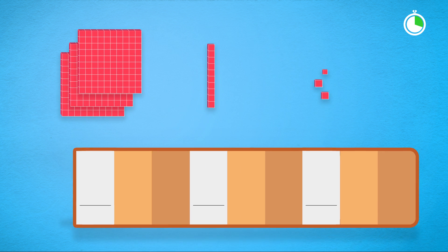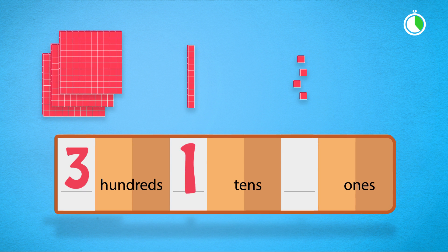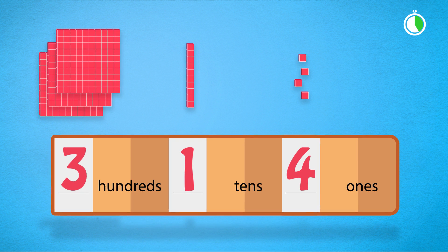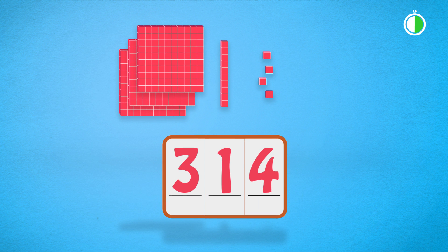A numeral expander can help students to write and then read three-digit numbers in this way. First, write digits on this opened expander to match the picture of blocks. Now let's close the expander to show the actual number.